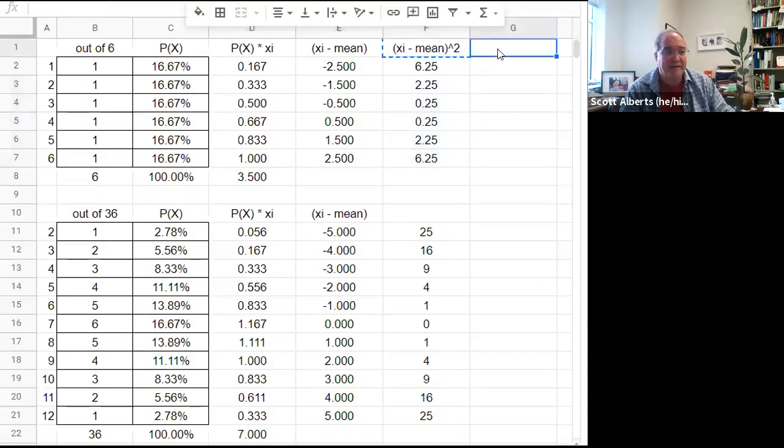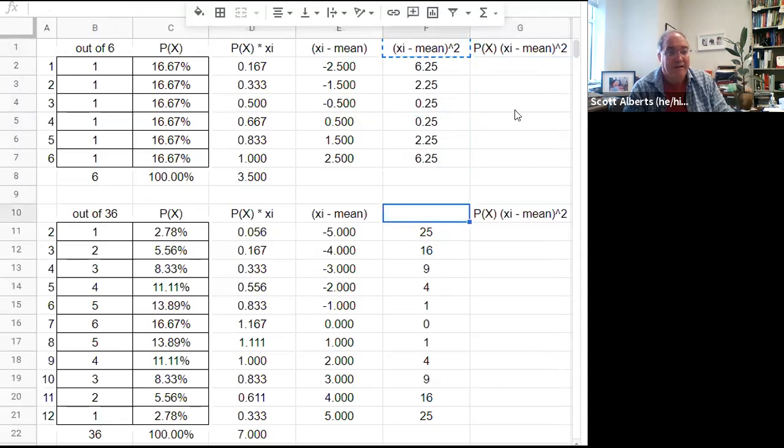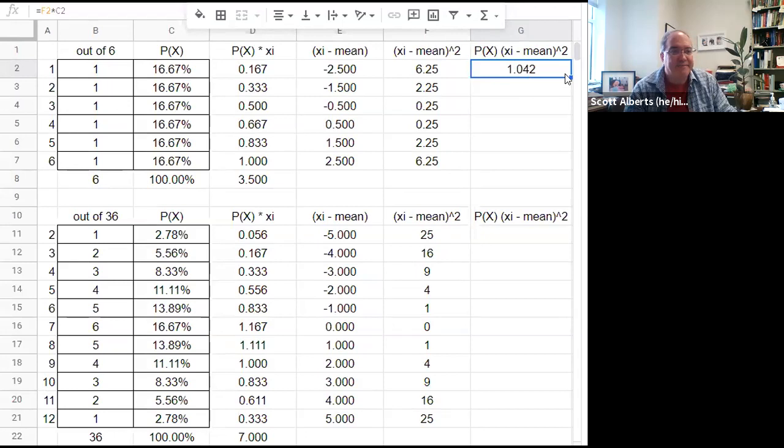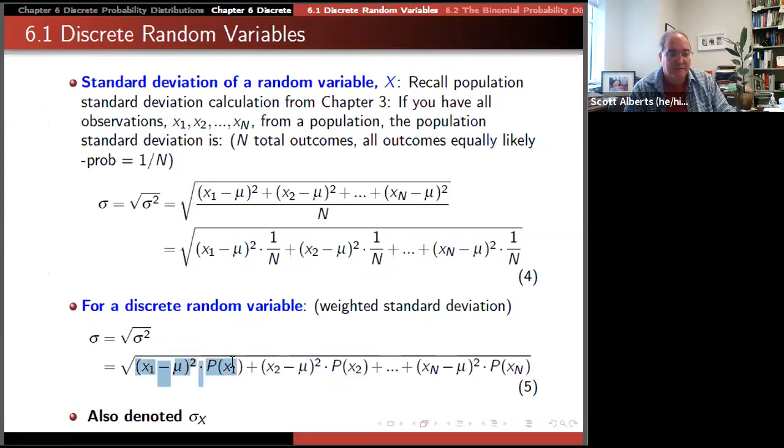The next step then is to multiply them times the probability. We have all of those. We already know the probability. To just take this value times the probability gets you that value. Even though the formula looks kind of scary, we've done each term in the formula. Pretty straightforward. We took each value, subtracted the mean, squared it, and multiplied it by the probability.